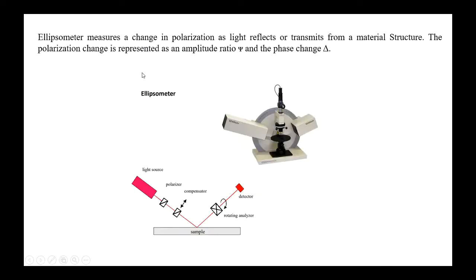What is an ellipsometer? An ellipsometer measures a change in polarization as light reflects or transmits from a material structure. The polarization change is represented as an amplitude ratio psi and the phase change delta. The left arm of the ellipsometer consists of a light source, polarizer, and compensator. The right arm consists of a rotating analyzer and detector.